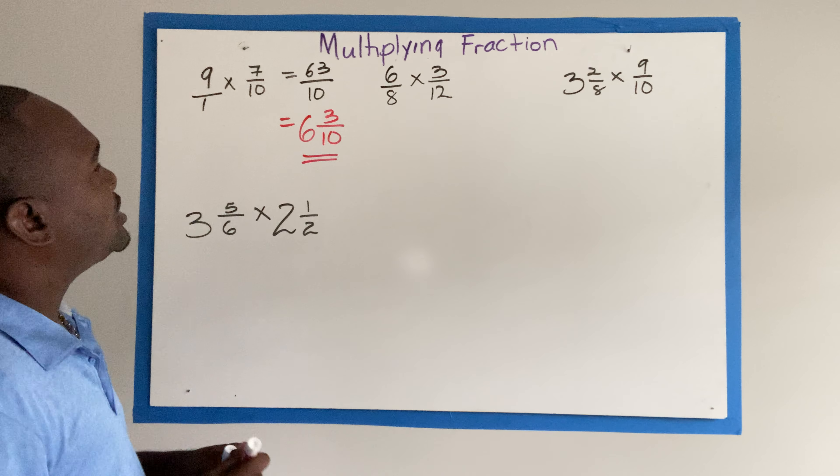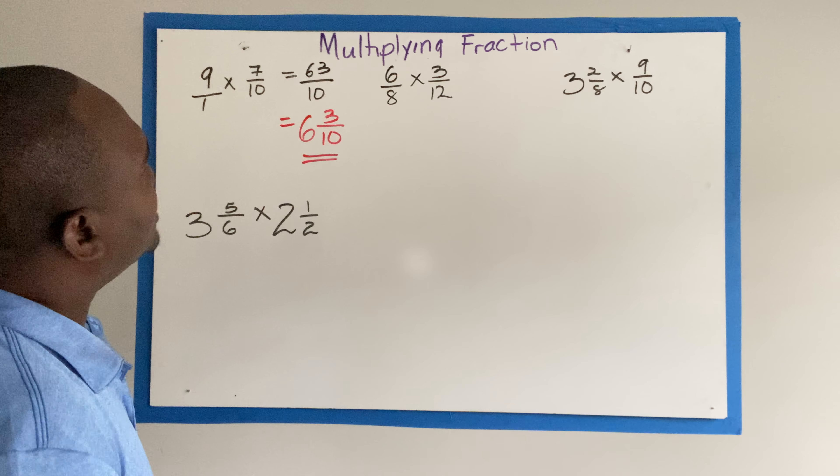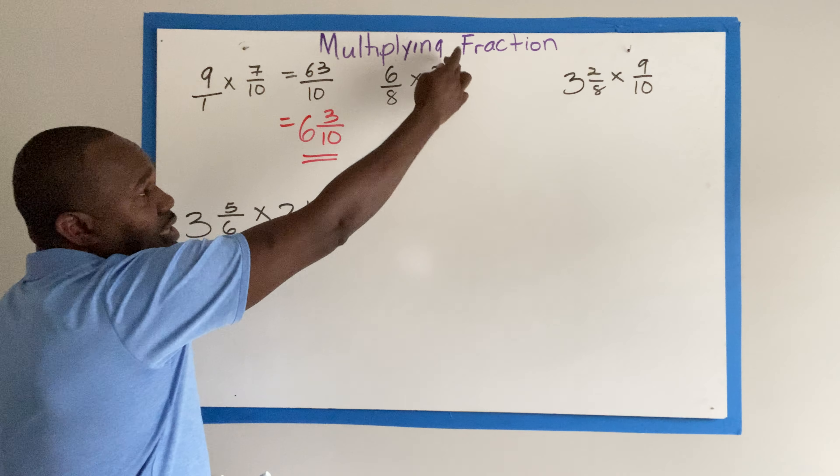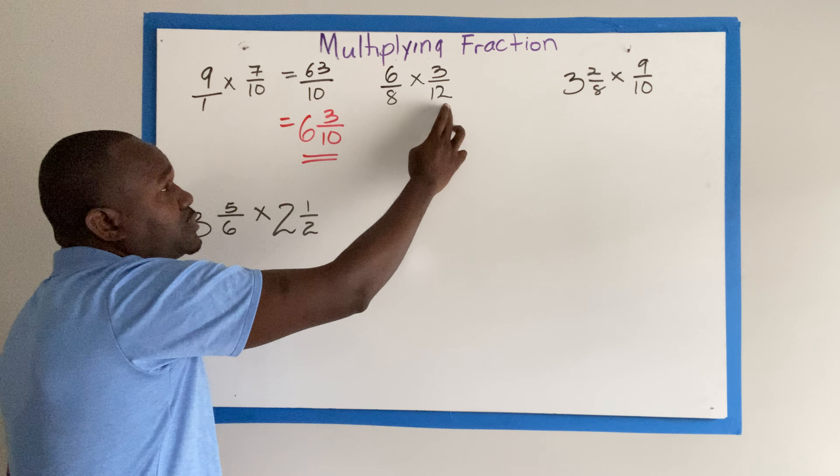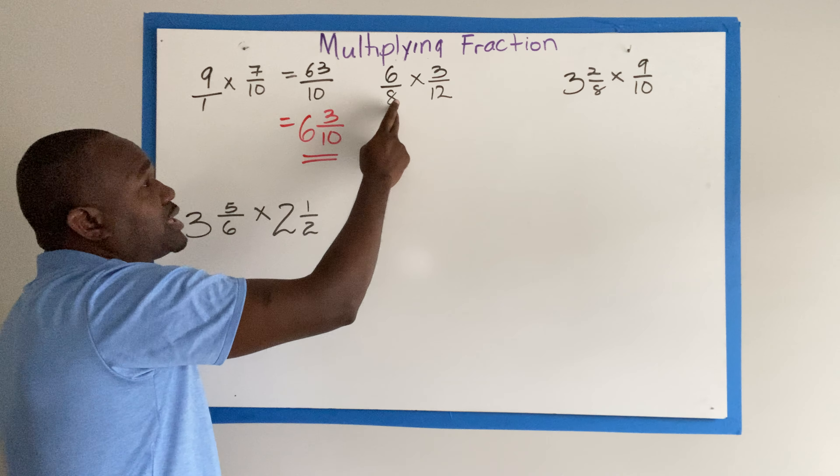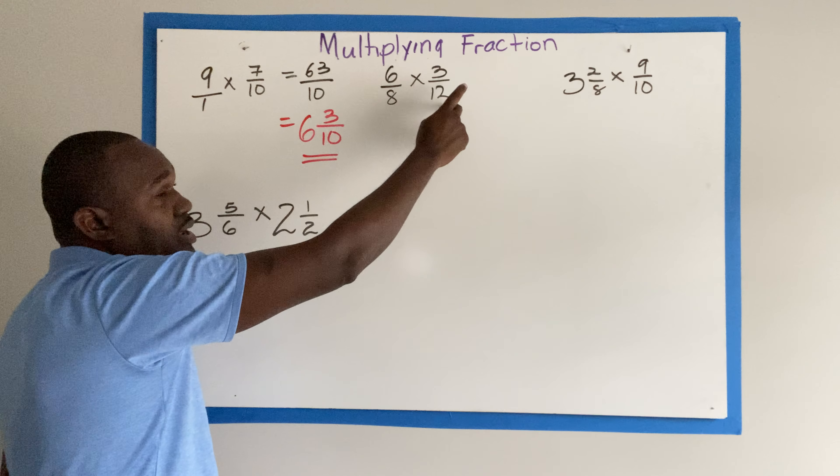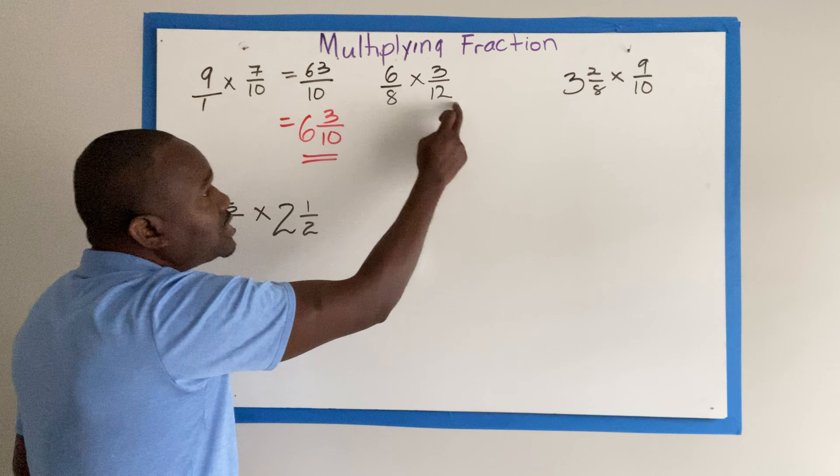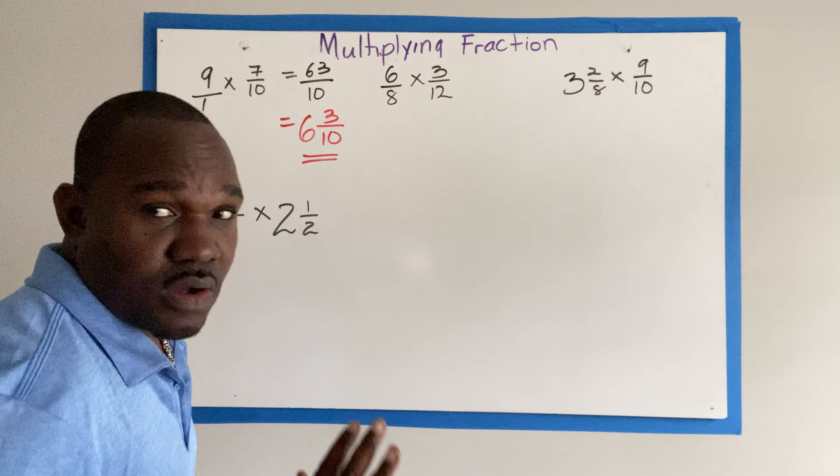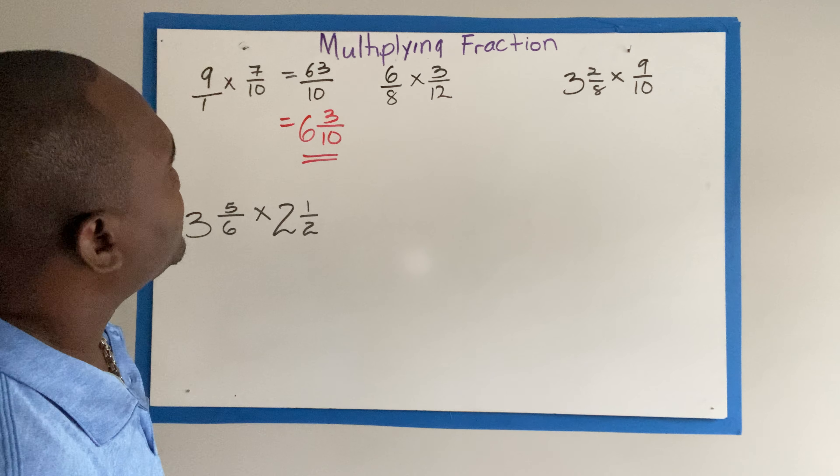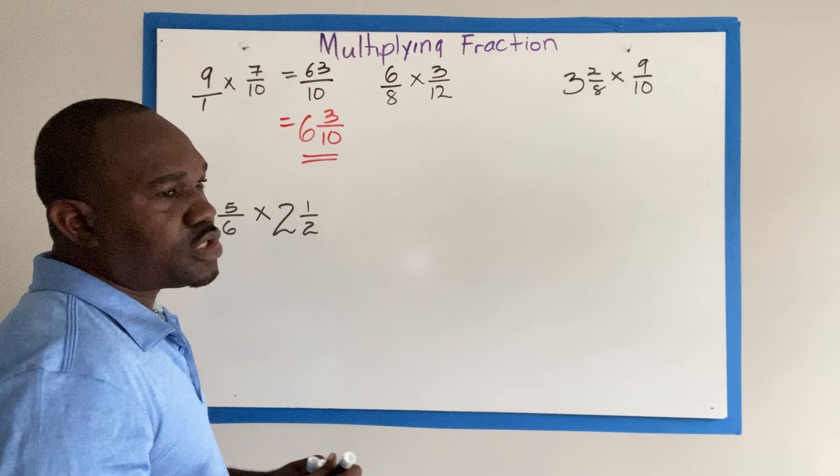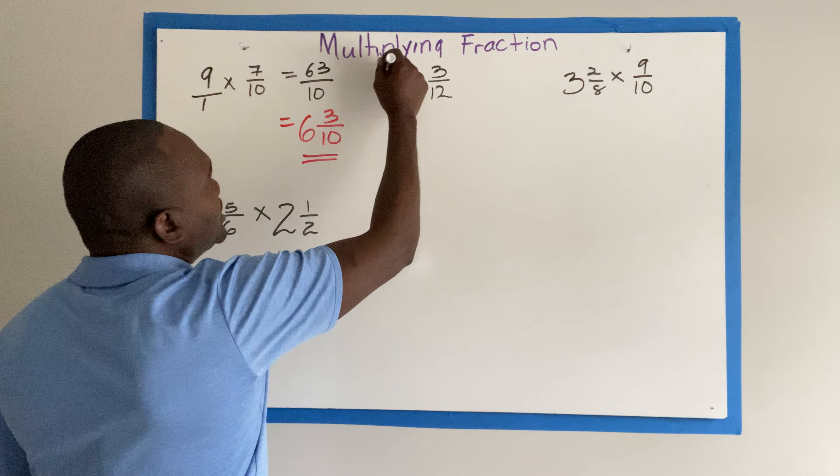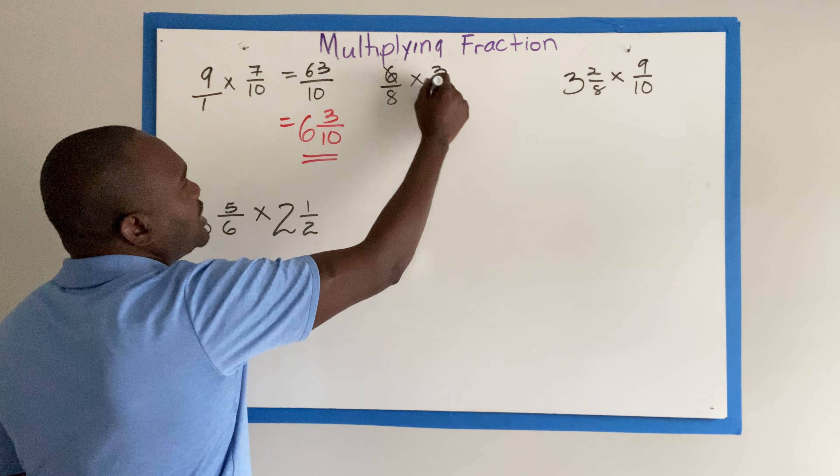Now let's look at that one. 6 over 8 times 3 over 12. Again, we check for cancellation. We can cancel here 3 and 12. We can cancel here 6 and 8. We can cancel here 6 and 12. But we can't cancel here 8 times 12. No, 6 and 3. Never horizontally. So whichever one you want to choose, your answer will be the same.